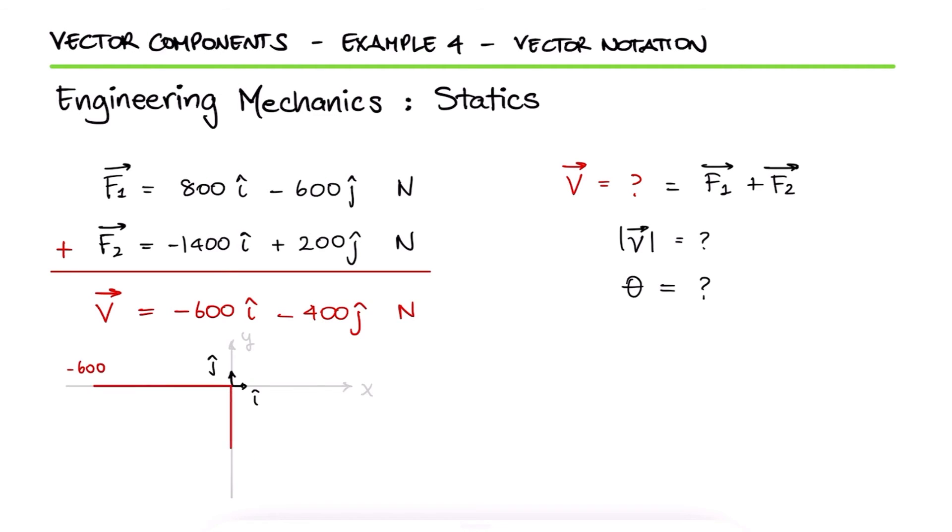Looking at this vector on the Cartesian plane, we see that the angle it makes with the positive x axis is equal to 180 plus the arctangent of the absolute value of the y component over the x component.